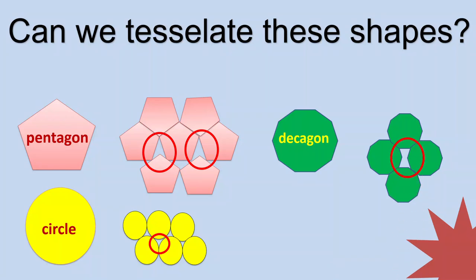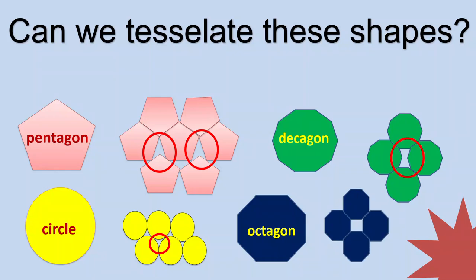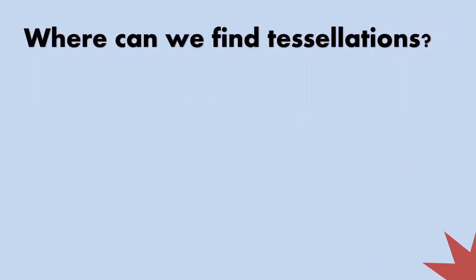How about the octagon? All right. Let's continue. So, can we tessellate octagon only? No, right? Because there's a space. But if we're going to combine an octagon and a square, we can actually combine these two shapes to form a tessellation.